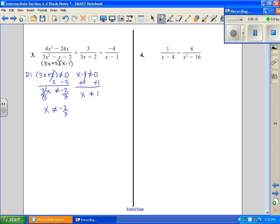Next I'm going to find a common denominator. It's going to be 3x plus 2 and x minus 1. So I'm going to write my common denominator above each of these terms. 3x plus 2, x minus 1. Write it above each term in the problem.